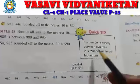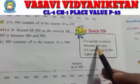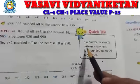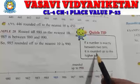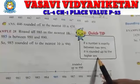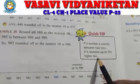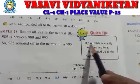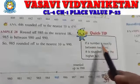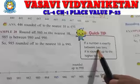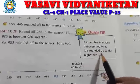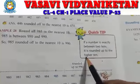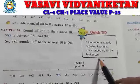See, if your number is exactly between two 10s, it is rounded up to the higher 10. If your number is exactly between two 10s, it is rounded up to the higher 10.